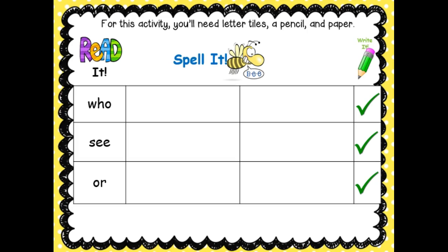Alright, boys and girls, here are our sight words for today's lesson. Look at the first word and tell your learning coach this word. Read it to your learning coach. This word is 'who.' Look at the word, then use your letter tiles to spell the word 'who.' When you've spelled it with your letter tiles, write it on your paper with your pencil. Pause this lesson to work on this word.